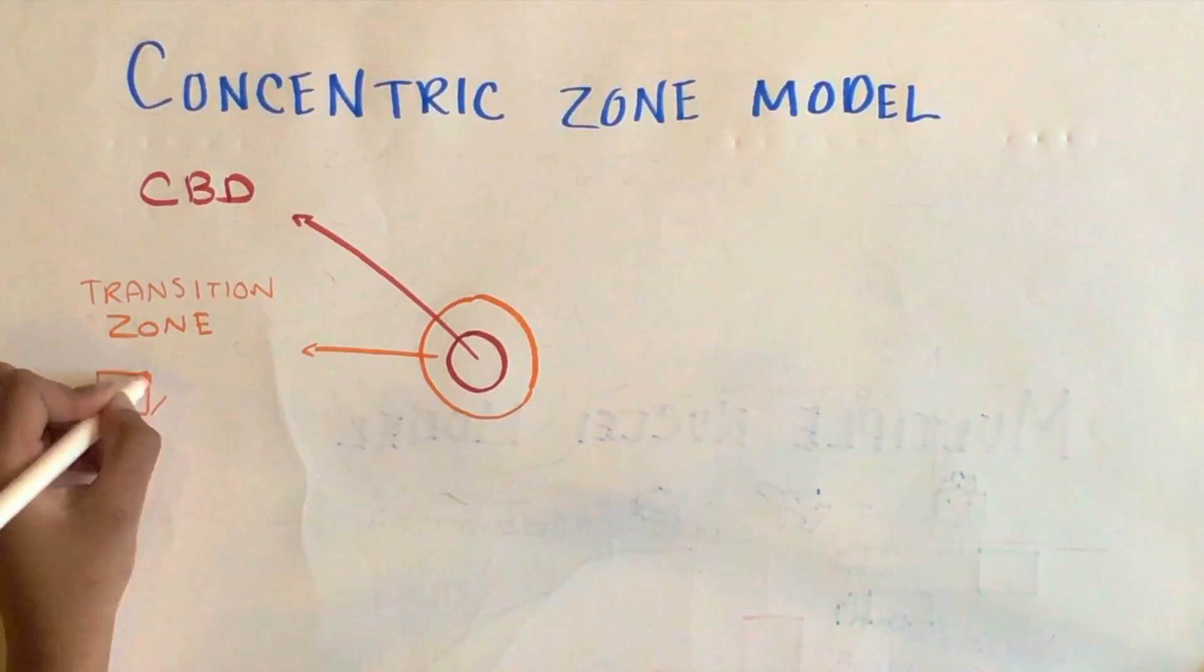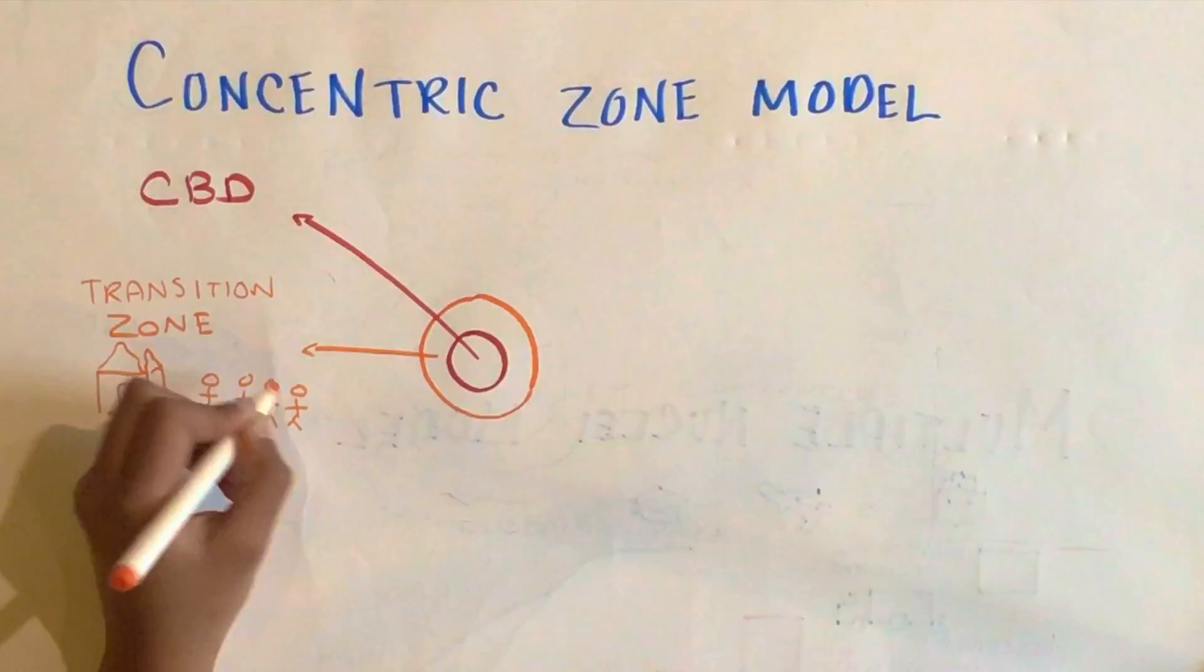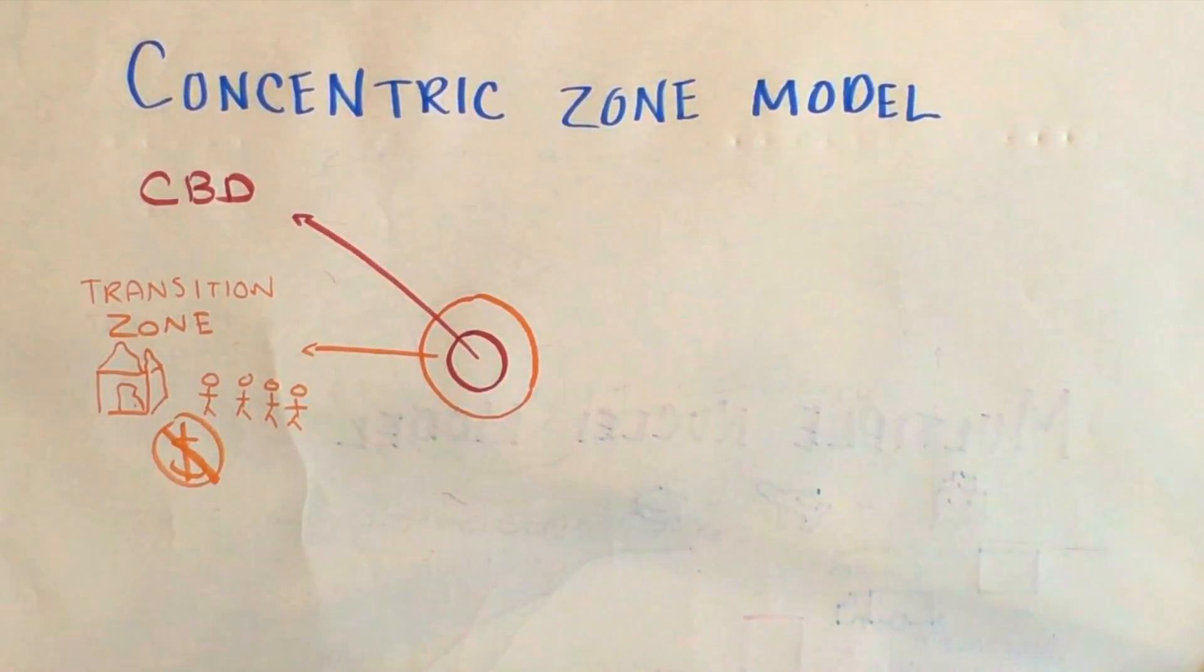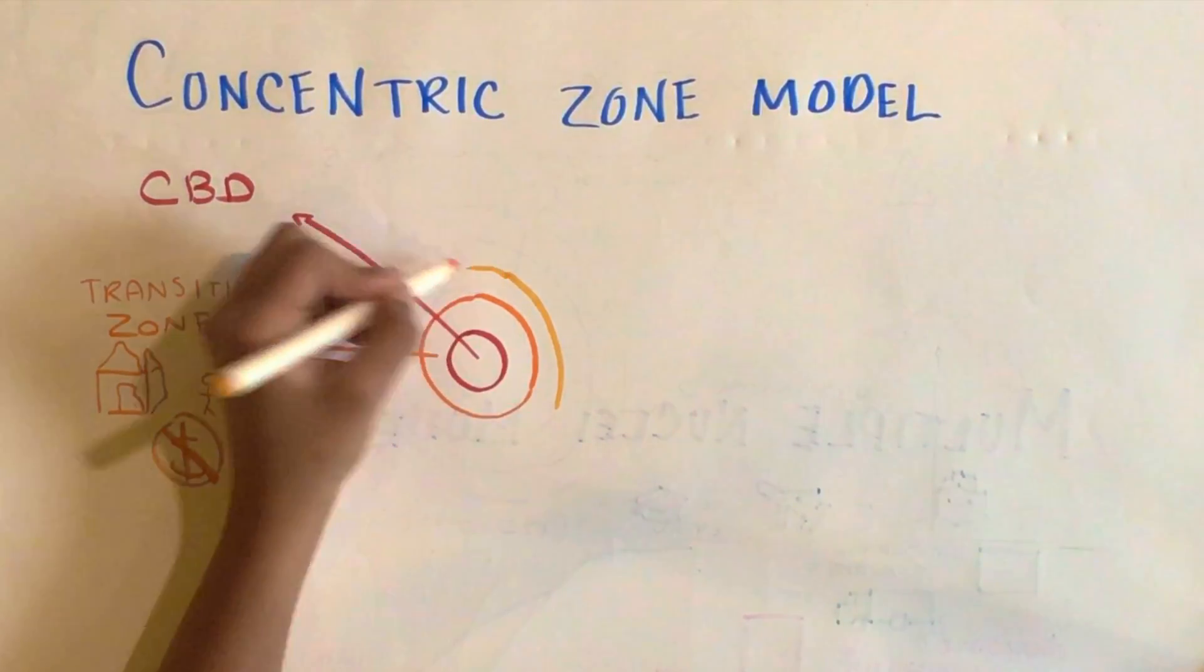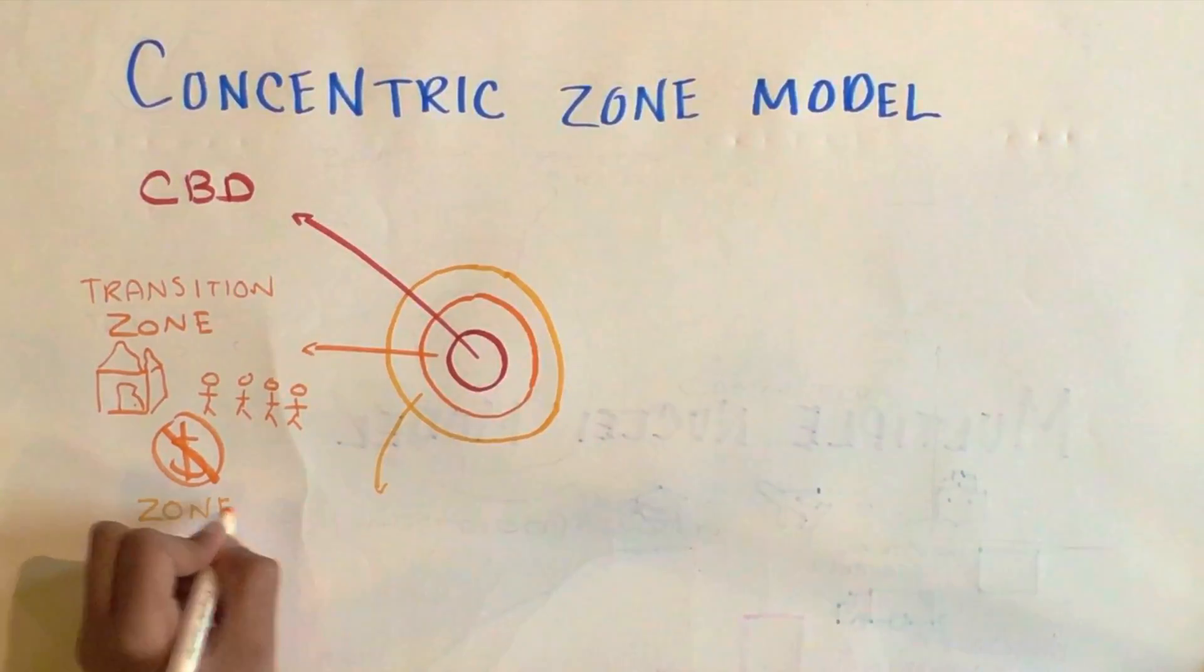The first zone outside the CBD is the transition zone, composed of a mix between poor housing and business, usually very unpredictable in its layout. The largest concentration of population is here. High crime rates and poverty are here also due to population, as well as a high number of immigrants.